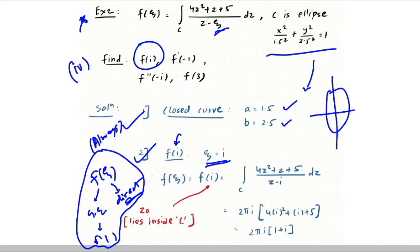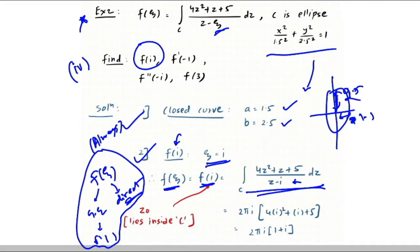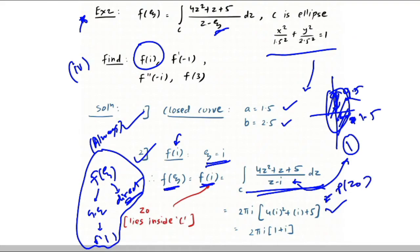Substitute ζ = i to get ∫_C (4z² + z + 5) dz / (z − i). The point i = (0, 1) lies inside the ellipse (since 1 < 2.5 vertically). By the Cauchy integral formula, the answer is 2πi × ψ(i), where ψ(z) = 4z² + z + 5. Substituting z = i gives the final value 2πi(1 + i).